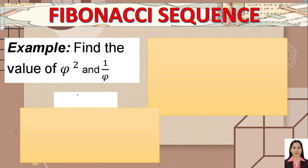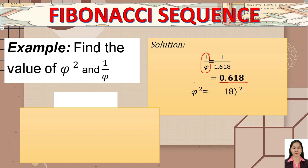Let's find the value of phi squared and 1 over phi. For 1 over phi: 1 divided by 1.618 equals 0.618. For phi squared: 1.618 squared equals 2.618.